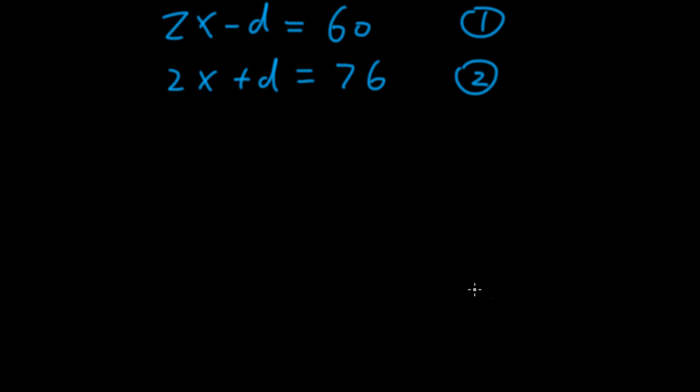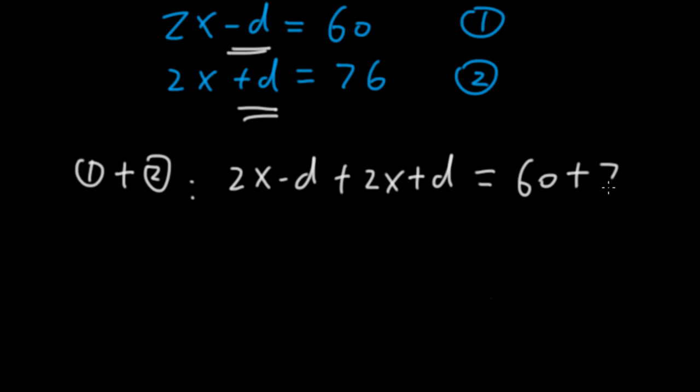A third way of solving this system is by observing that we have minus D and plus D here. So if we add the two equations, D would be cancelled out and we know x. Once we know x, we can sub it into one of the equations and then solve for D. So equation 1 plus equation 2, we add up the left-hand side. It's 2x minus D plus 2x plus D equals 60 plus 76.